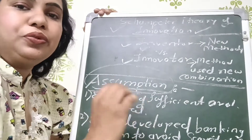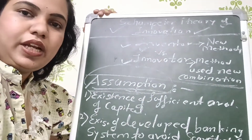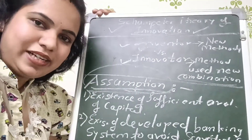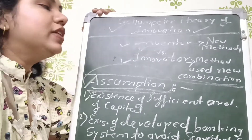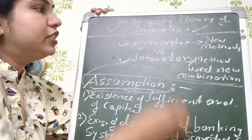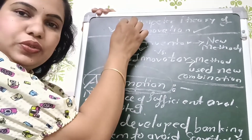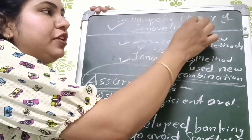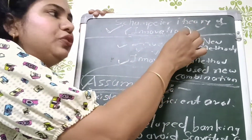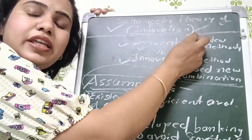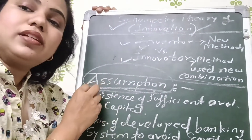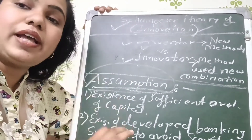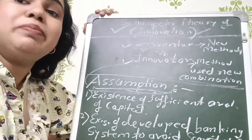In economics, assumptions are necessary for every theory. For example, if we assume we have 10,000 rupees in our pocket, we can plan what shopping we can do — that's our assumption. Similarly, authors in economics give their ideology and point of view: if certain conditions are met, then innovation is possible and beneficial for any country, manufacturer, or business.